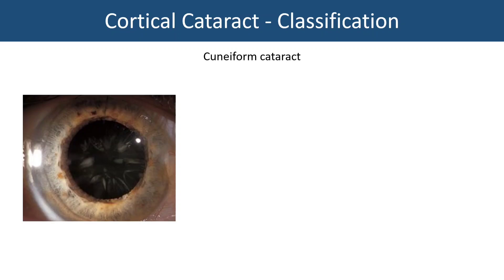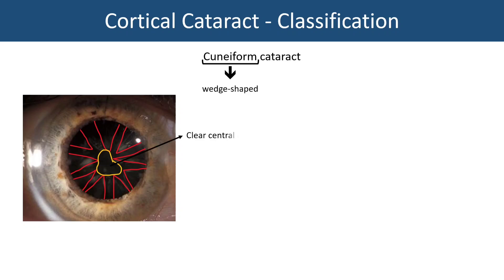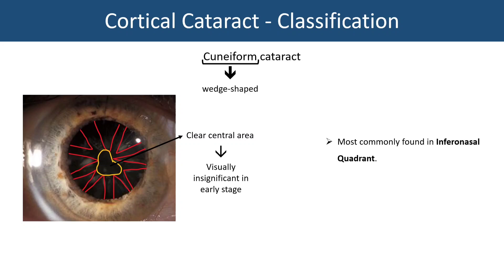The word cuneiform means wedge-shaped. So in the lens, there are wedge-shaped opacities coming from the lens periphery going towards the center, close to the equator, leaving the center of the lens clear. It is visually insignificant in the early stage but gradually interferes with the axial area and vision becomes impaired. Most commonly they are found in the inferronasal quadrant, first occurring inferronasally and subsequently all around. It is the most common type of senile cataract.